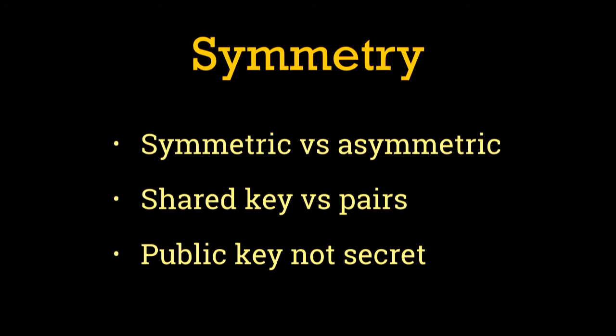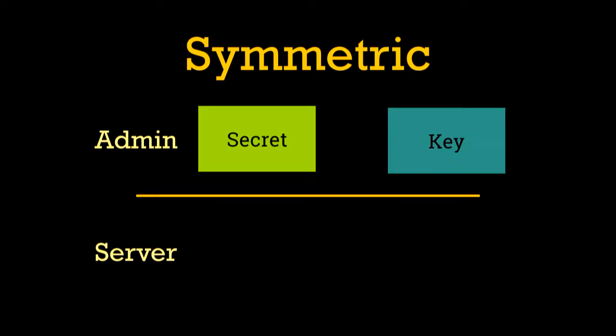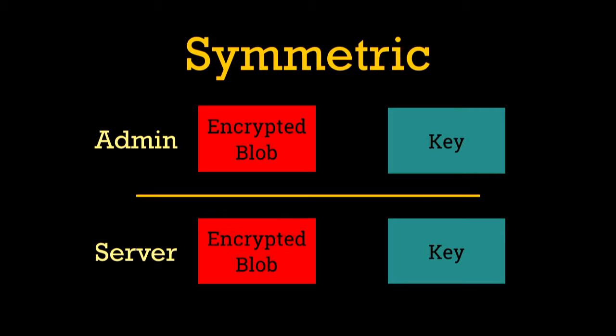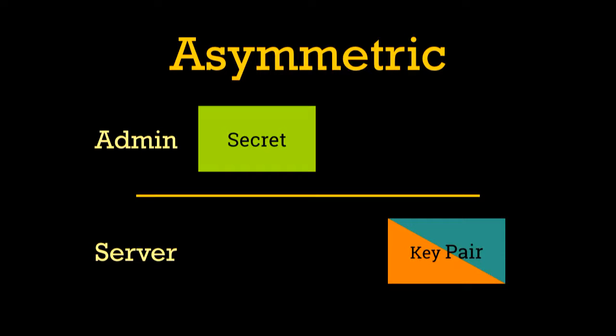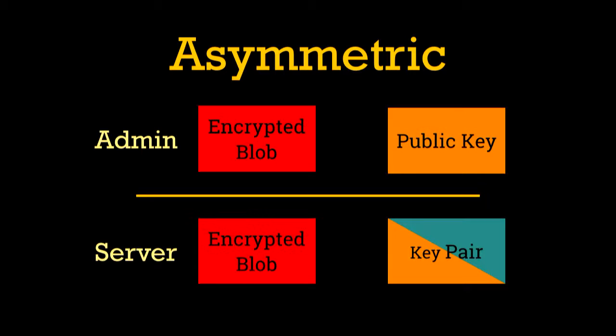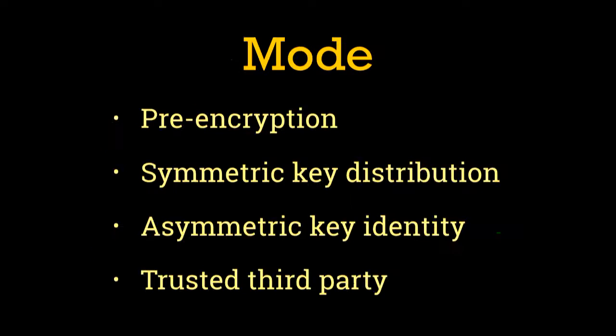Let's talk a little about some of the cryptography involved. With symmetric cryptography, we start with a secret, generate a random key, use the key to encrypt the secret, get some kind of encrypted blob, transfer the key and blob to the server, and the server uses the key to decrypt and get back our secret. With asymmetric cryptography, we generate a public-private key pair on the server, retrieve the public key, use it to generate an encrypted blob, send that blob to the target server, and it decrypts to the secret. There are three main modes: symmetric pre-encryption, asymmetric pre-encryption, and trusted third party.